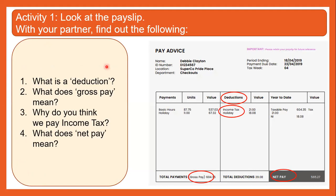Here is your first activity. Here's an example of what a typical payslip looks like. An adult who works and gets a taxable income would receive something like this every month or every week. With your partner, look at the following: What is a deduction? Look under the tab that says 'deduction' — we see income tax and holiday. What does gross pay mean? Why do you think we pay income tax? And what does net pay mean — you can see it's different from gross pay, why might that be? Have a conversation with your partner, or if you're at home, have a think for yourself. Pause here to do that now.